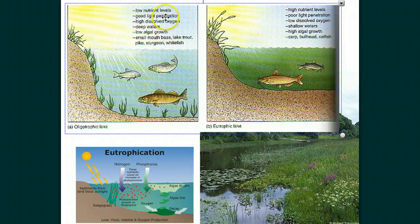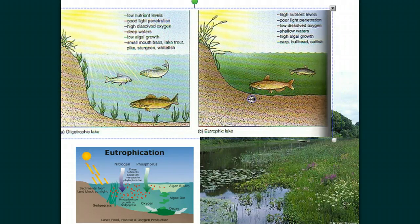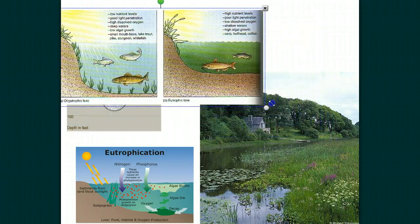Here is a picture comparing an oligotrophic lake — low nutrient levels, good light penetration, lots of oxygen, deep waters, low algae growth — versus a eutrophic lake: shallow with low dissolved oxygen, high algae growth, high nutrient levels, and poor light penetration. So very different types of lakes.